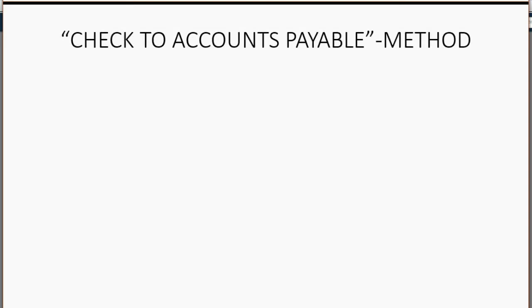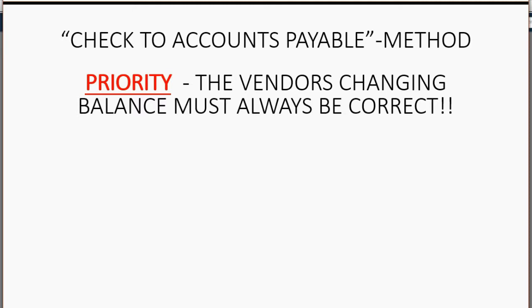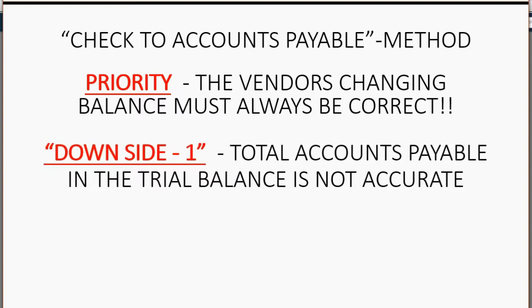The method shown in this video is called the check to accounts payable method. The good side is that the vendor's balance is always correct and your vendor records are correct to the last detail at any given moment. However, there are two downsides. The first is that total accounts payable in the trial balance is not accurate, because the vendor you pay in advance will have a negative balance, offsetting total accounts payable, so you won't know the total money owed to all other vendors.